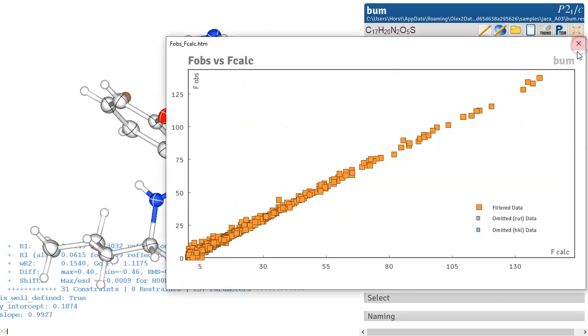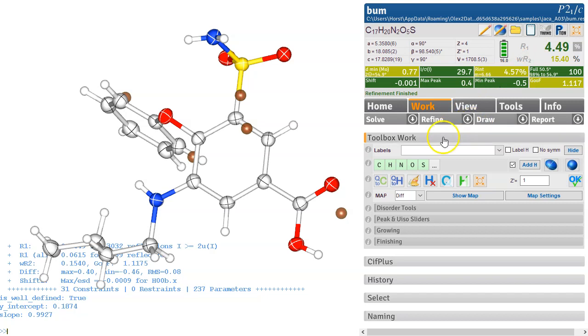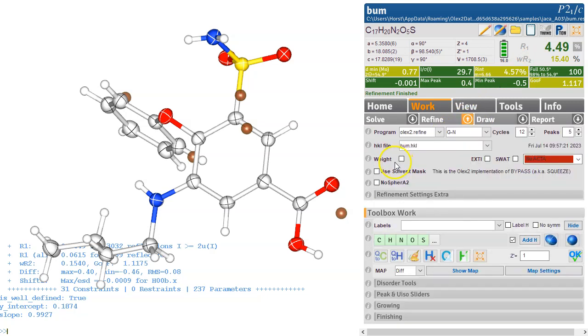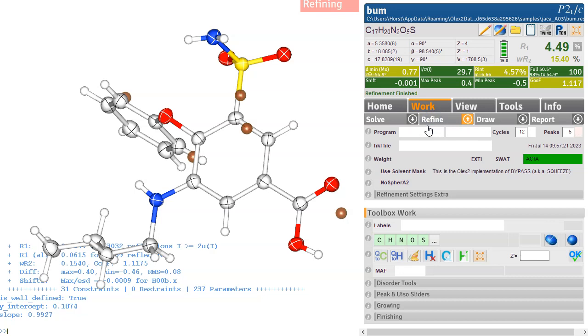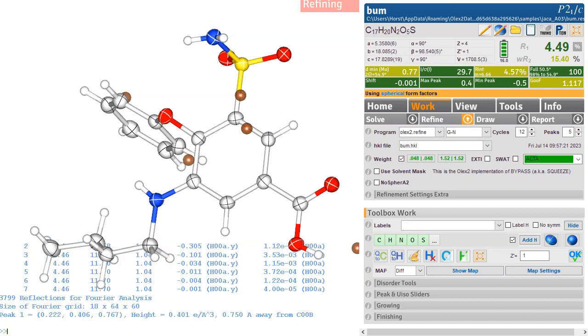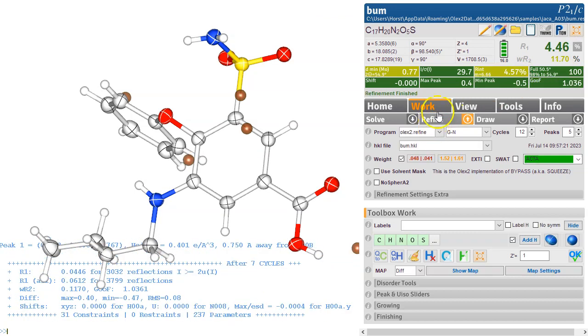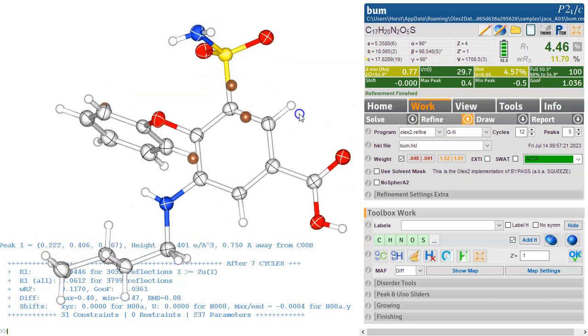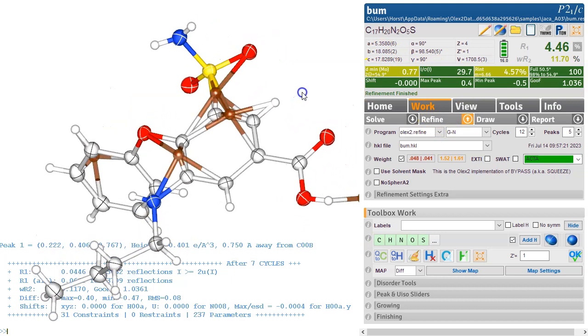Let's just check over here. So this is nice and straight. And we see whether we've got the weighting scheme on that we haven't got the weighting scheme on yet. So we need to switch the weighting scheme on. And also ACTA, of course, to get a CIF file in the end. So let's just refine this with the weighting scheme on, and it's all settled, and it's all fine.